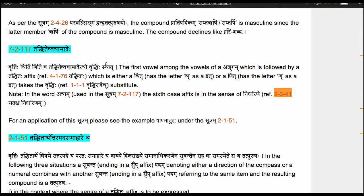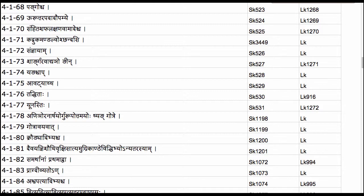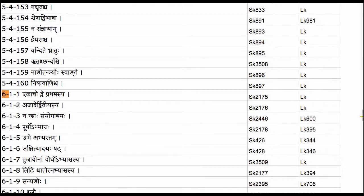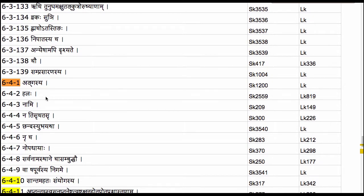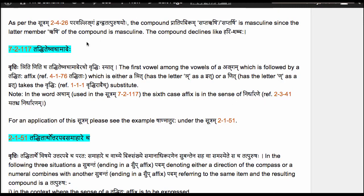Let us now take a Sutram from the Angasya Adhikaraha, which runs from Sutram 641 Angasya all the way down to the end of the 7th chapter of the Ashtadhyayi. The Sutram here is 7-2-117 Taddhiteshvachamadehe.